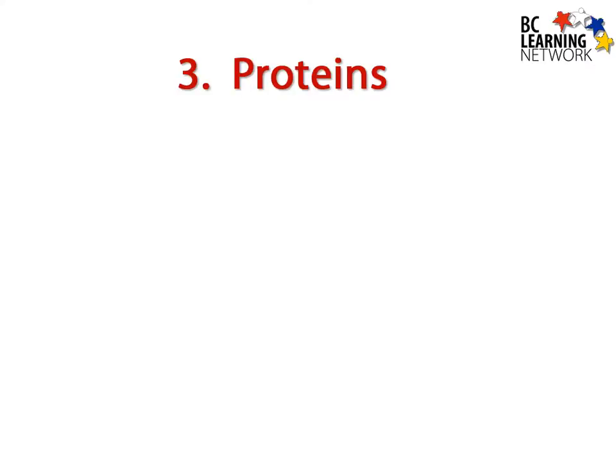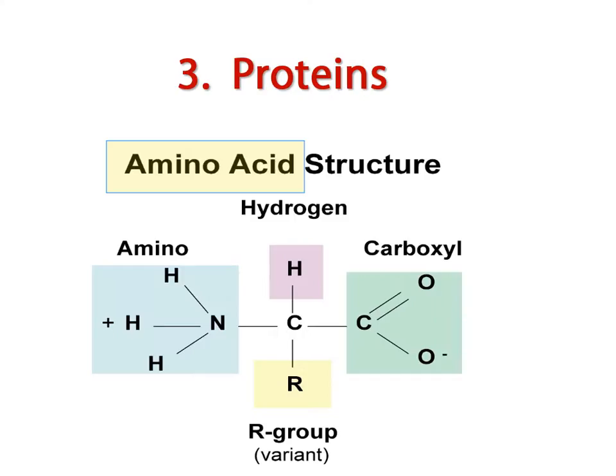Now what about the structure of proteins? The building blocks of all protein molecules in the body are amino acids and there are 20 different kinds of amino acids.